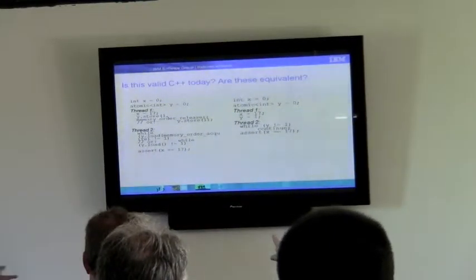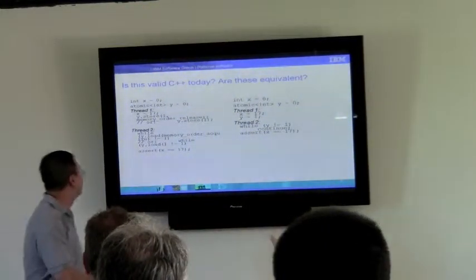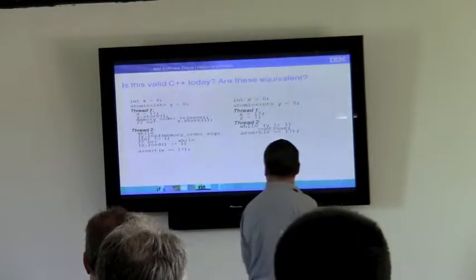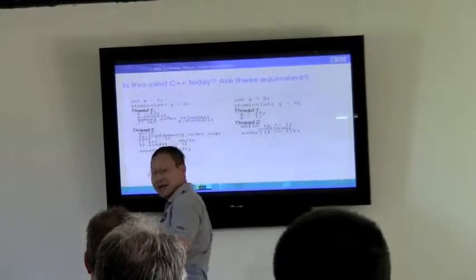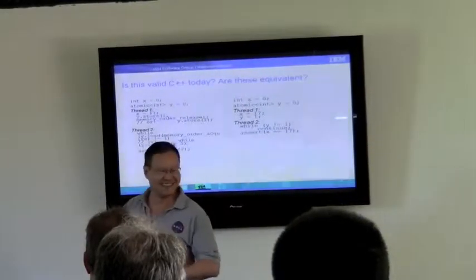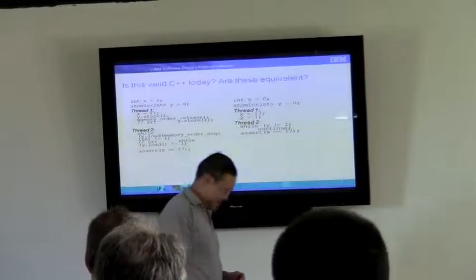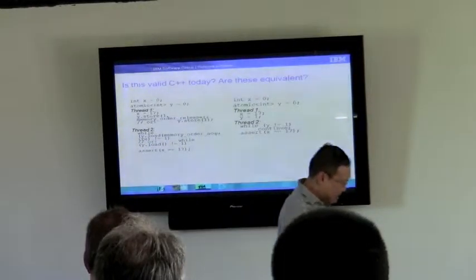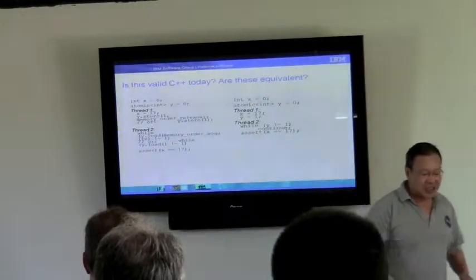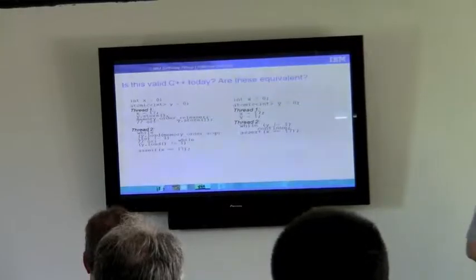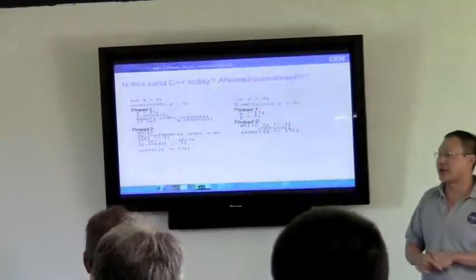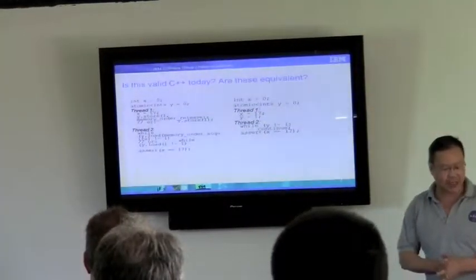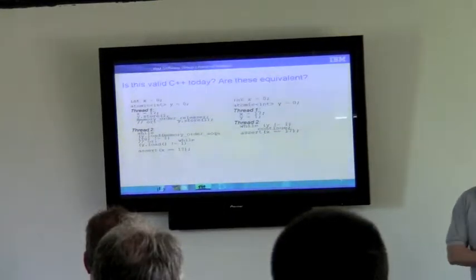Memory order release — you mean memory order underscore release? I probably do; there's actually an underscore here. So all this is doing is saying that X is not atomic but Y is atomic, and you want to use Y to synchronize access to X, guaranteed, thus guaranteeing the assignment to X is visible.